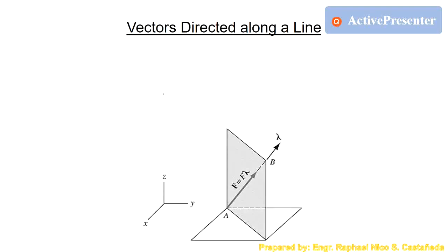An example of that is this one. Let's say we have a vector directed from point A to point B — this is force vector F. You want to determine the vector notation or vector representation of that force vector F. The force vector is directed between two points in space with given coordinates: XA, YA, ZA for point A, and XB, YB, ZB for point B.